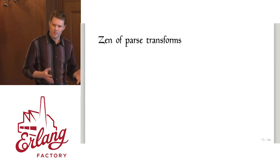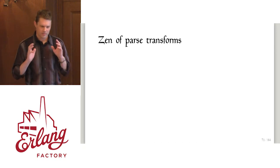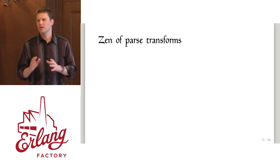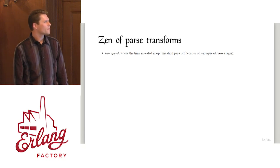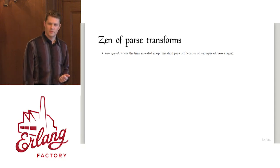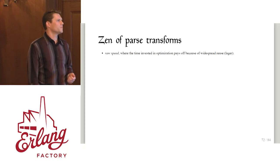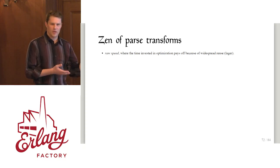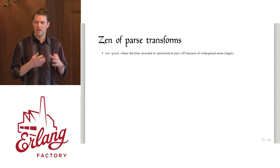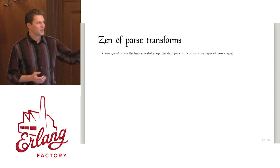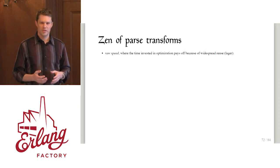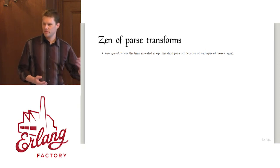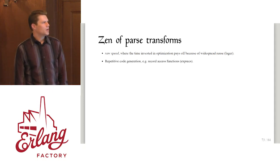We've built up a parse transform and looked at some things definitely not to do, and some really cool ideas. What are the takeaways? The logger use case: raw speed. If you look at what that parse transform did to a single log message, it took a lot of work to get right. It's only in something like logger — where there's a lot of widespread use and performance is extremely critical — that the effort is really going to pay off.